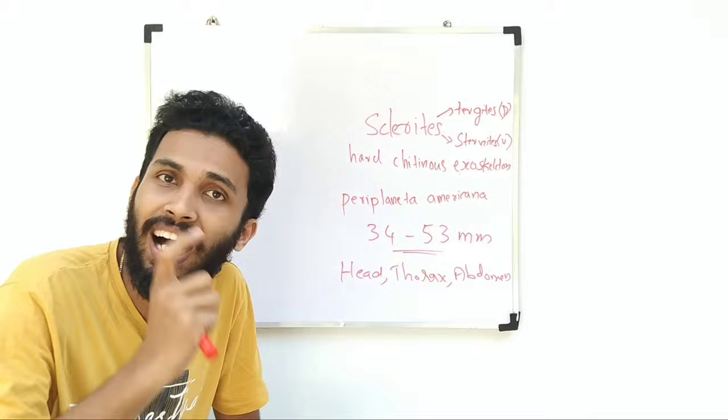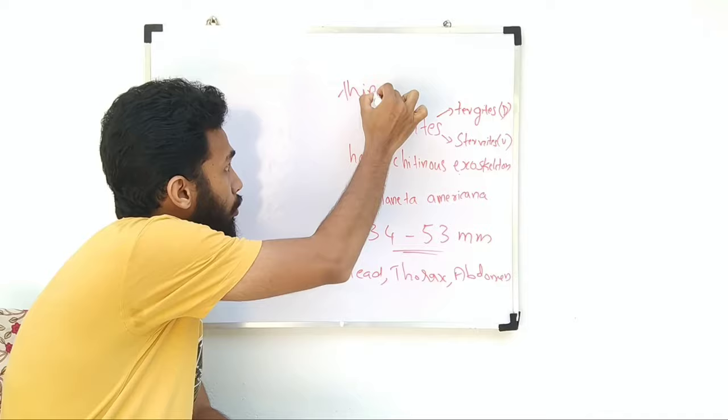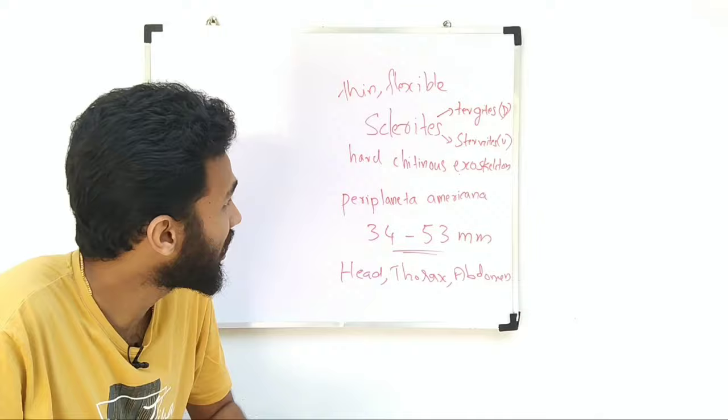Between the sclerites is the arthrodial membrane or articular membrane. This membrane is thin and flexible.